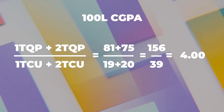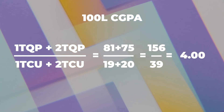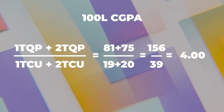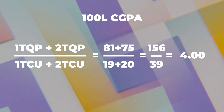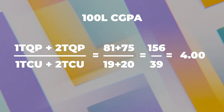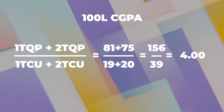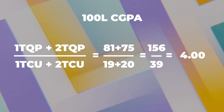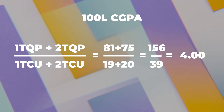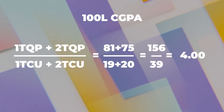The CGPA for the two semesters will be the total quality point for first semester plus the total quality point for second semester, all over the total credit unit for first semester plus the total credit unit for second semester. That is 81 plus 75, all over 19 plus 20, giving 156 over 39, which gives a CGPA of 4.0.